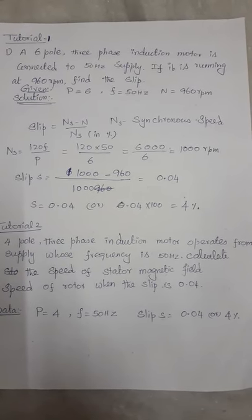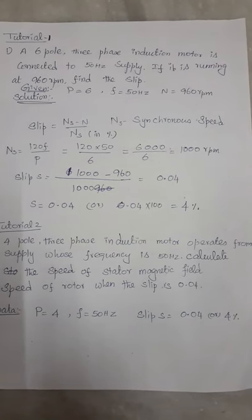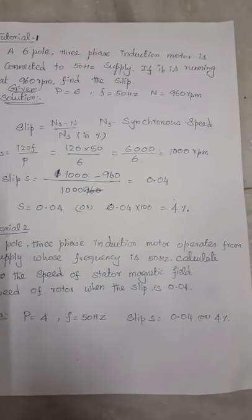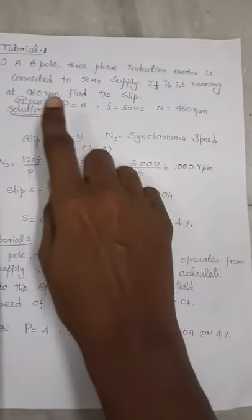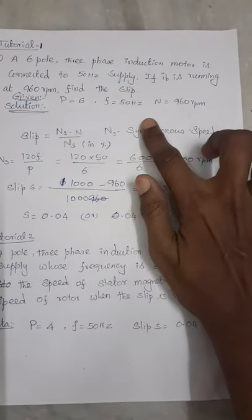If it is running at 960 RPM, find the slip. This is what the question asks. So write down the given things: number of poles P is equal to 6, frequency 50 hertz, then actual speed 960 RPM.